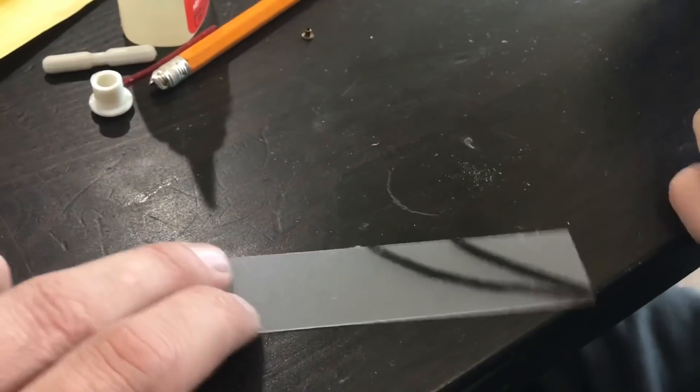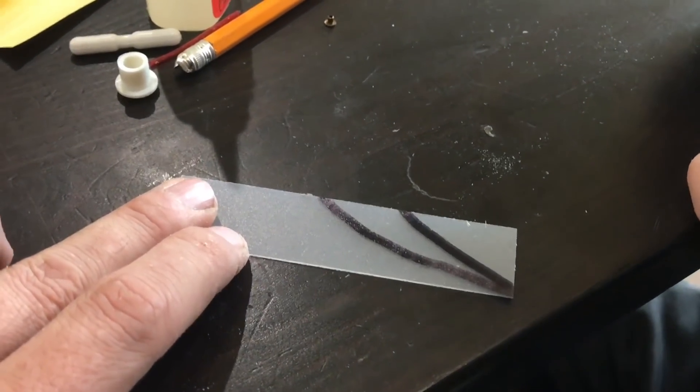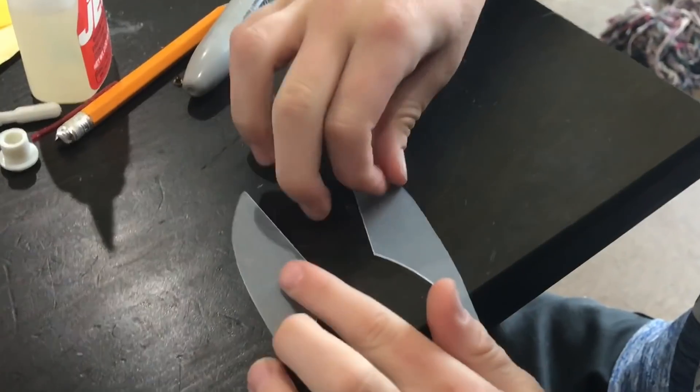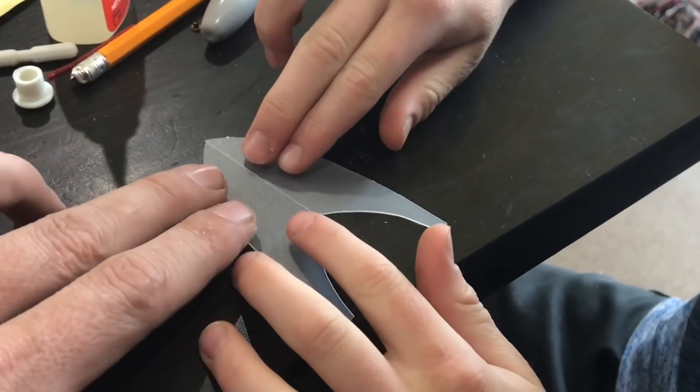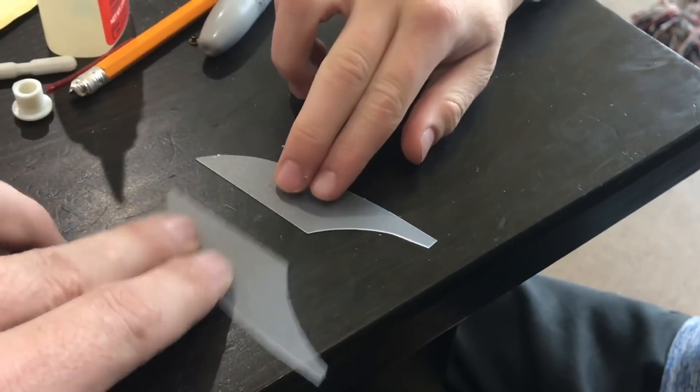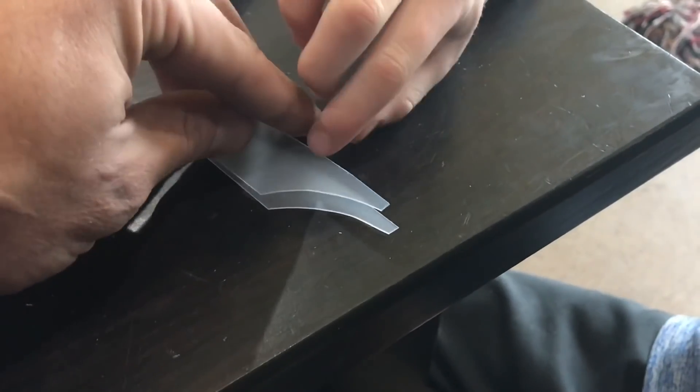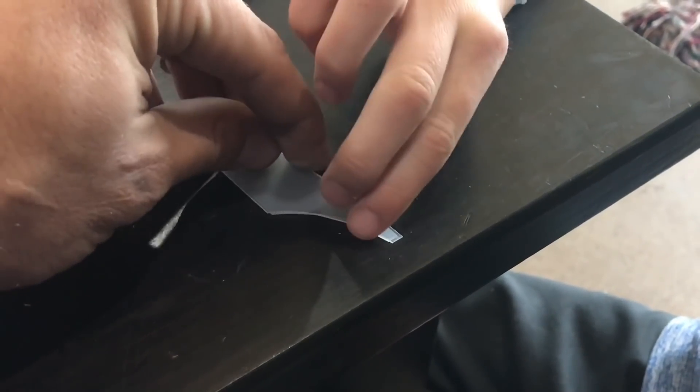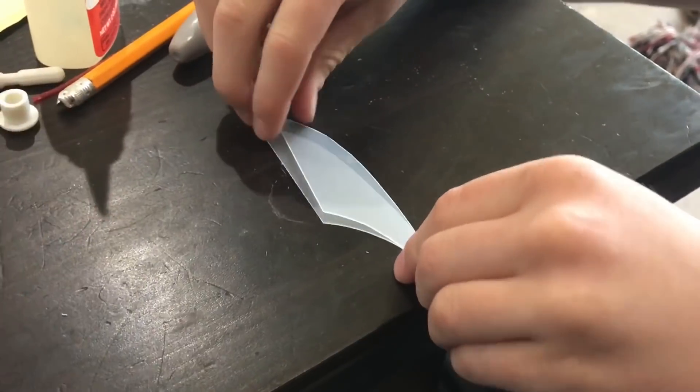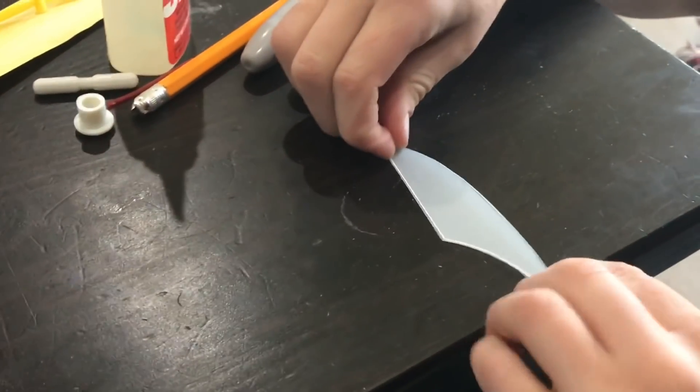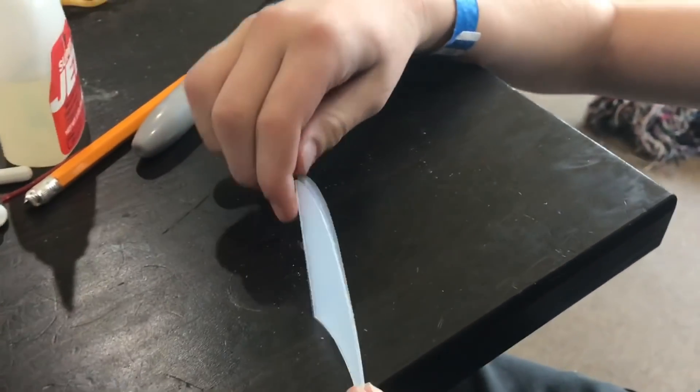Okay, so you want them to kind of come to a point? At the bottom. Okay, so we've got our two fins cut out now. And we cut the first one out, right? And then we laid it over and used it as a pattern to make our second one. All right.